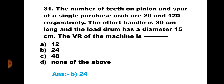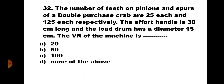Question number 32: The number of teeth on pinions and spurs of a double purchase crab are 25 each and 125 each respectively. The effort handle is 30 cm long and load drum diameter is 15 cm. VR is: A) 20, B) 50, C) 100, D) none of the above. Formula: VR = (N2 × N4 × 2L) / (N1 × N3 × d) = (125 × 125 × 2 × 30) / (25 × 25 × 15) = 937500/9375 = 100. The correct answer is C) 100.